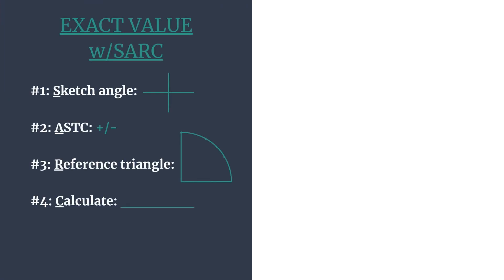Here's the method. The S stands for sketch the angle. Specifically, we'll sketch the terminal side. The A stands for ASTC, which helps us know which trig functions are positive in each quadrant.